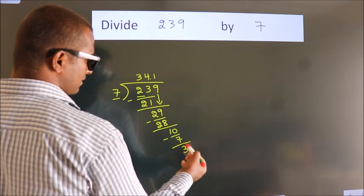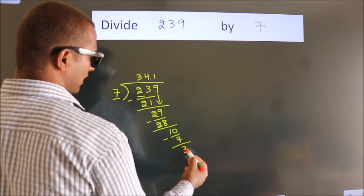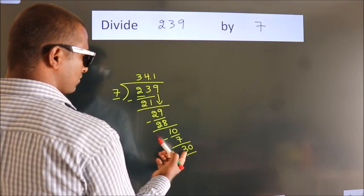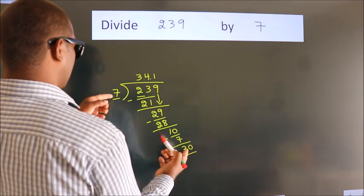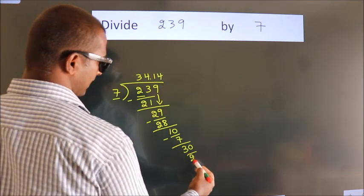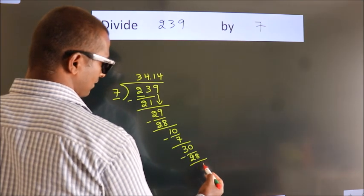After this, we already have the decimal, so directly take 0. So 30. A number close to 30 in the 7 table is 7 times 4, which is 28. Now we subtract. We get 2.